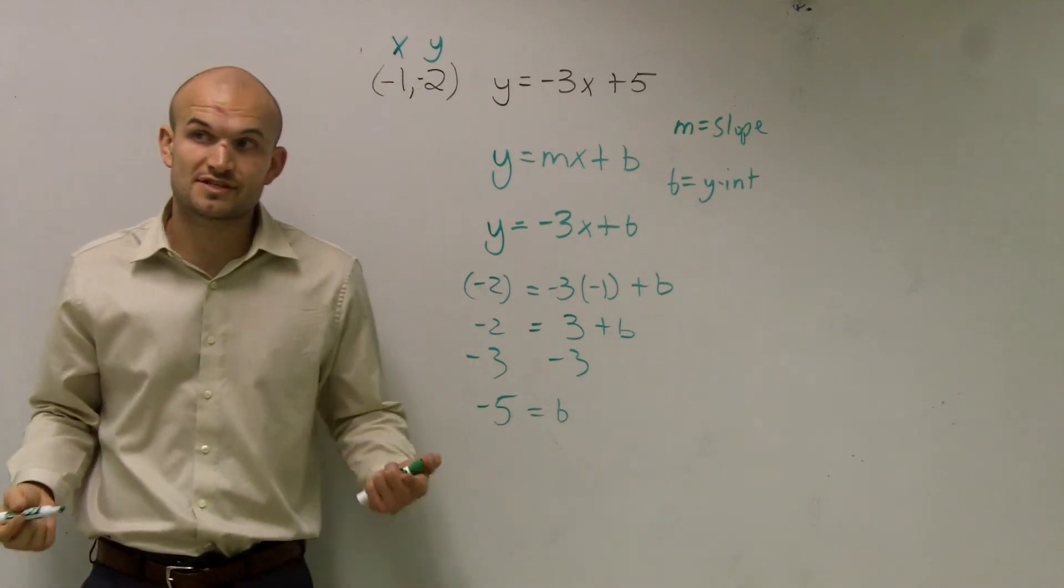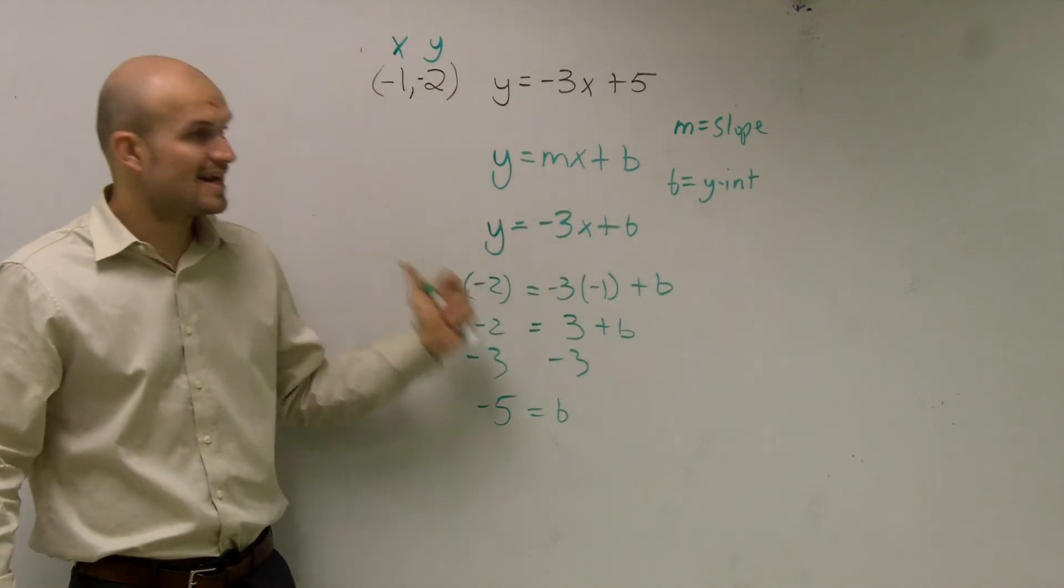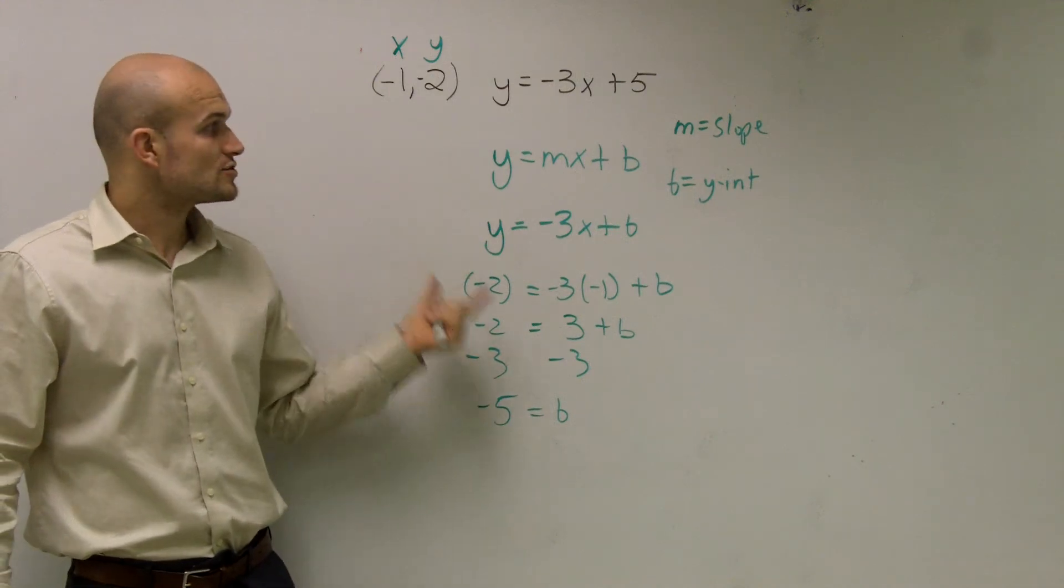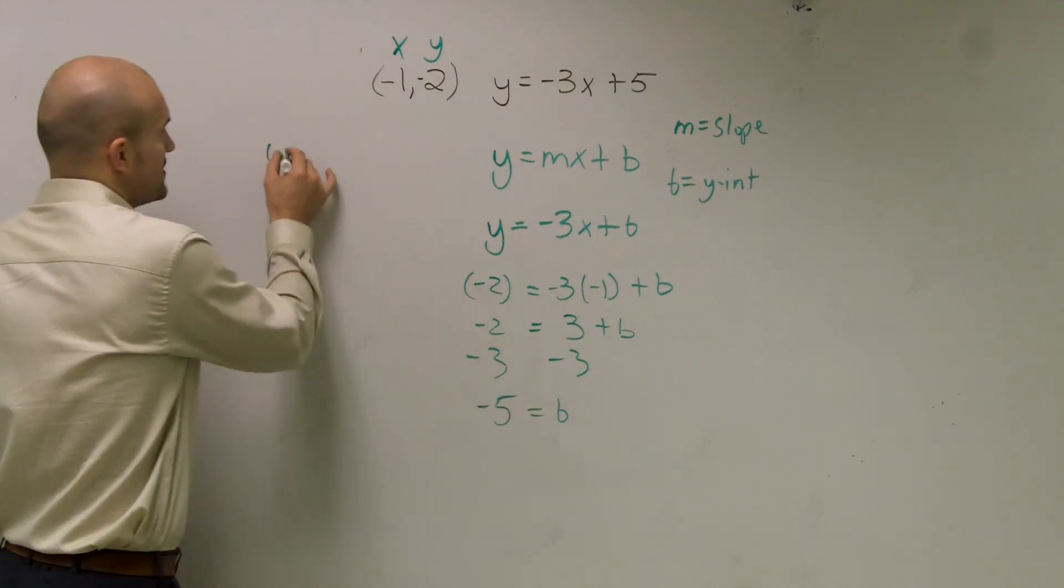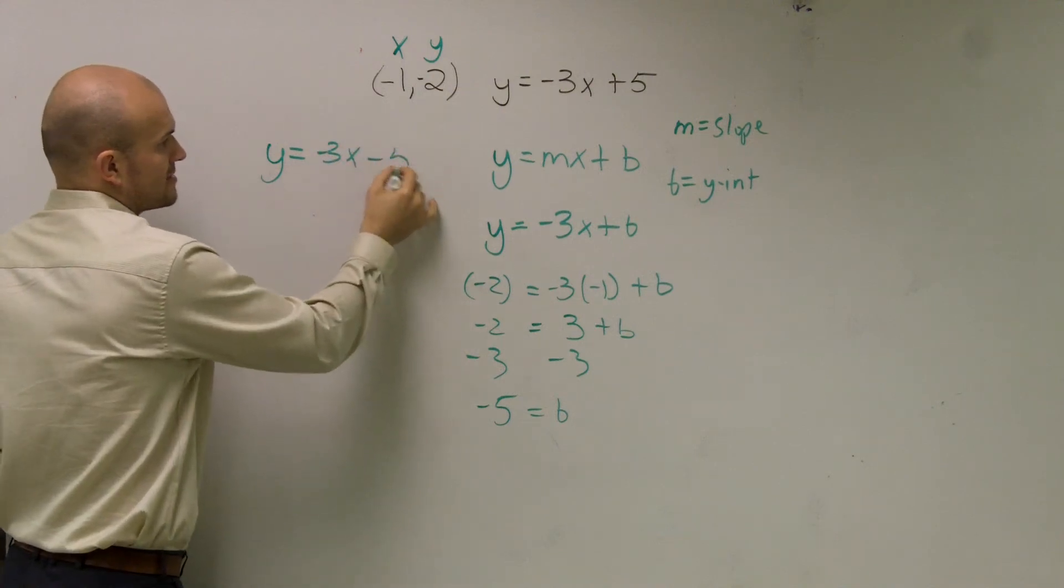So now, ladies and gentlemen, what I've just figured out is if I have the same slope and that line goes through this point, its y-intercept is negative 5. So the equation of the line is going to be y equals negative 3x minus 5.